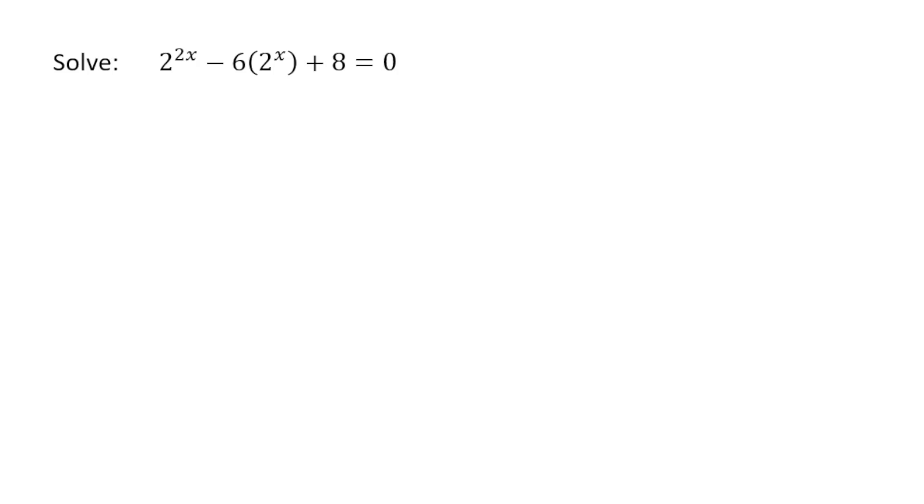So have a look at this particular equation here. We've got 2 to the power of 2x minus 6 times 2 to the power of x plus 8 is equal to 0. Now that probably looks extremely difficult to solve.